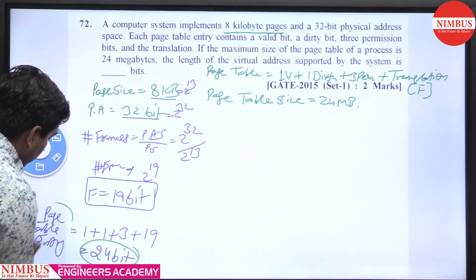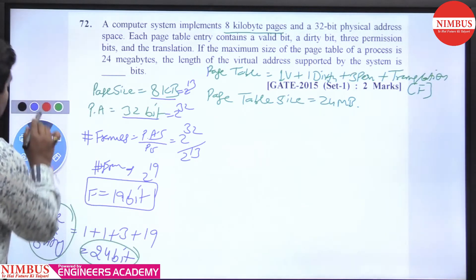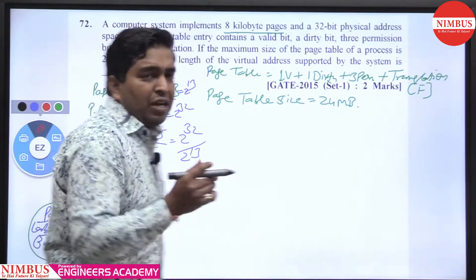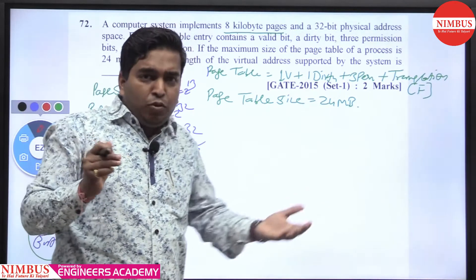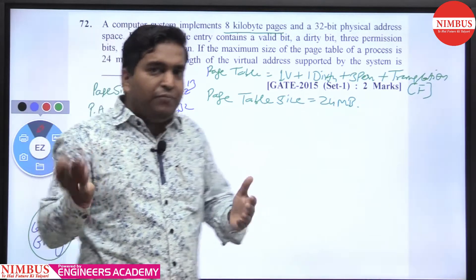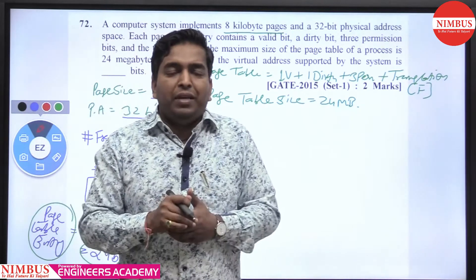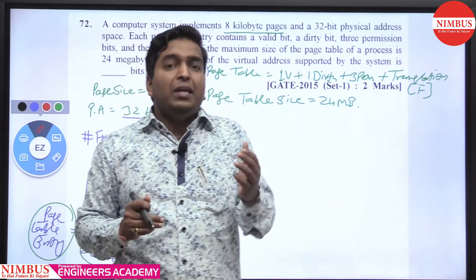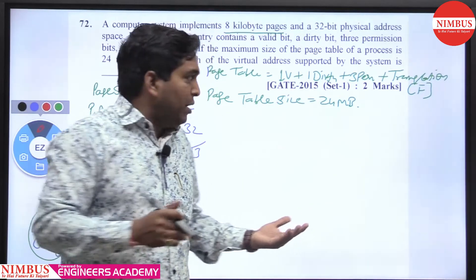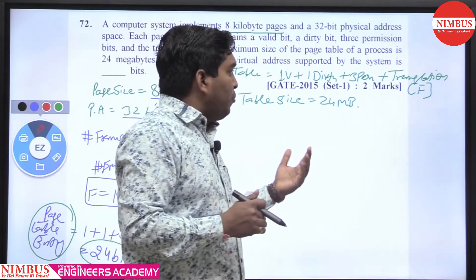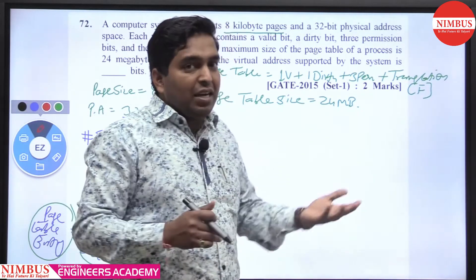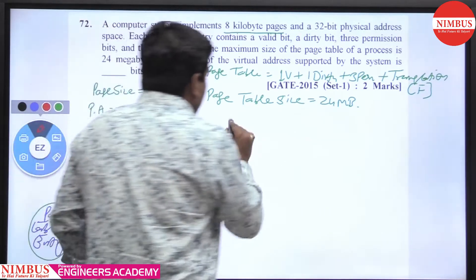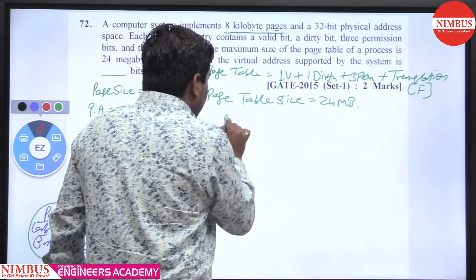Note that the question is asking about the number of bits for frames (F) and the size of the page table — but it is not directly giving you the number of pages. So you need to derive the number of pages from the given page table size.